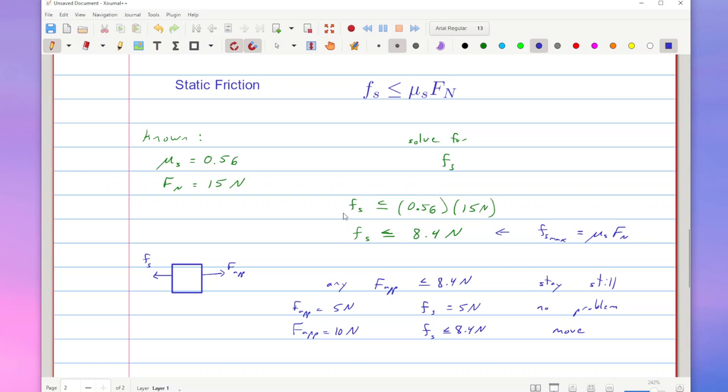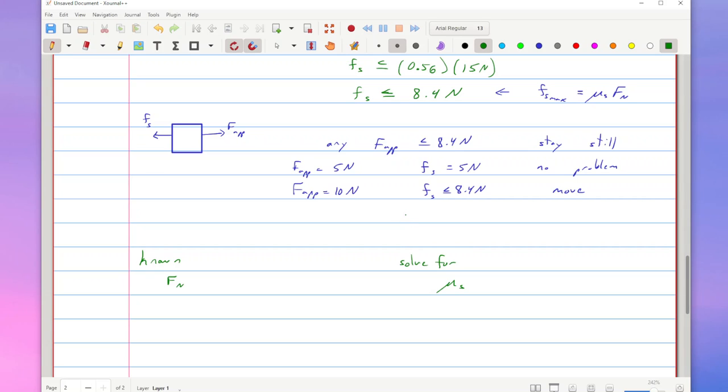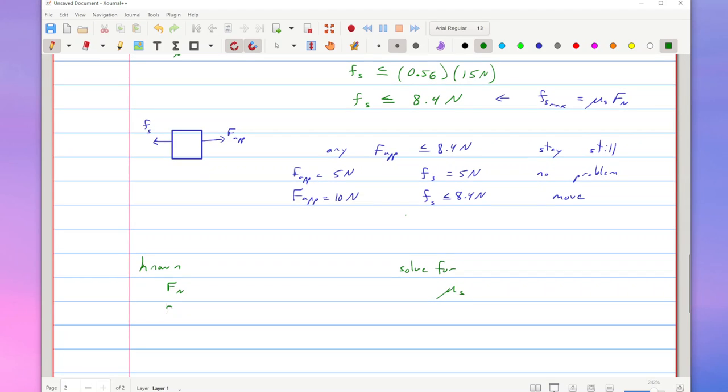Now, there's some other ways we can take a look at this problem. And so if we have different knowns, we can actually go through and try to solve for those. So like our kinetic friction case, we can actually go through and use this to solve for our mu s.